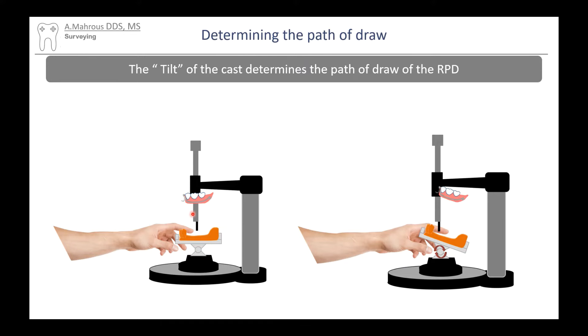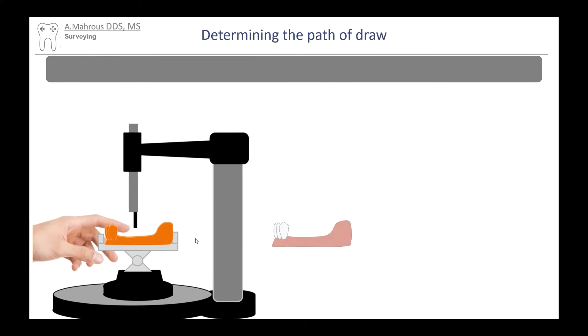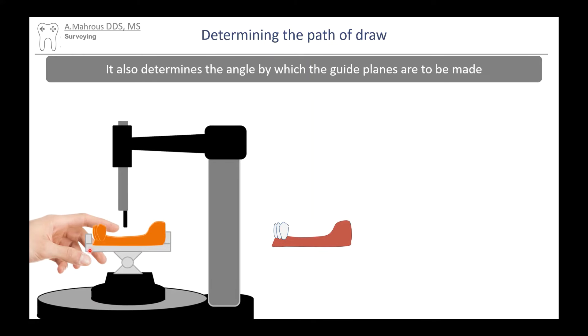The mandrel represents the path of draw of the RPD. So, in whichever angle you set your table relative to the mandrel, that would be the angle that your partial would eventually take to be inserted and removed from the patient's mouth. And since our guide planes determine the path of draw, the mandrel angle compared to your table also determines the angle that your burr would be taking when preparing guide planes.